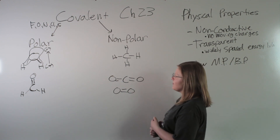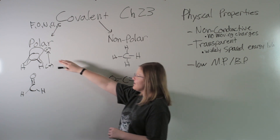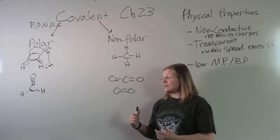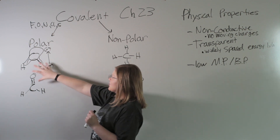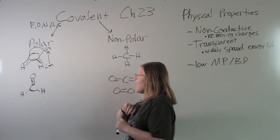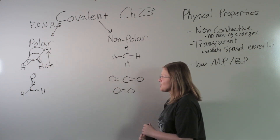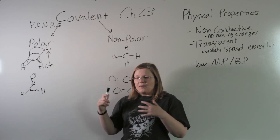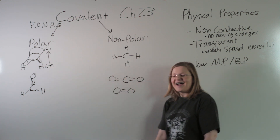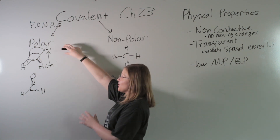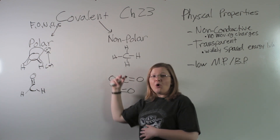Water is our poster child for a polar molecule. Oxygen is much more electronegative than hydrogen, so it's going to suck the electrons towards itself. The electrons spend more time around the oxygen than the hydrogens. Because electrons are negative, this makes the oxygen more negatively charged and the hydrogen more positively charged. It's important to note that molecules are always net neutral — I'm not talking about a full extra negative charge, just that one side is more negative and one side is more positive, but the whole molecule is net neutral.